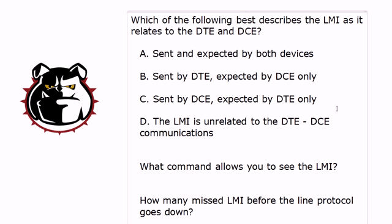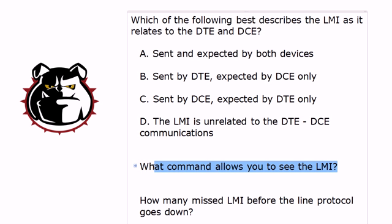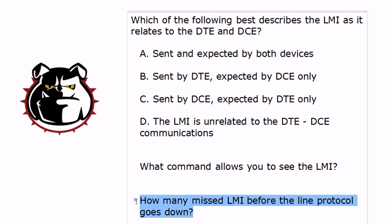Quickly going over this — a lot of good stuff here for frame relay. The LMI is going to be sent by the DCE and expected by the DTE. We saw one way to see what the LMI type was, and that was show frame LMI. And then debug frame LMI to see what's going on in real time. And we know that when we miss three LMI, the line protocol is going to go down.